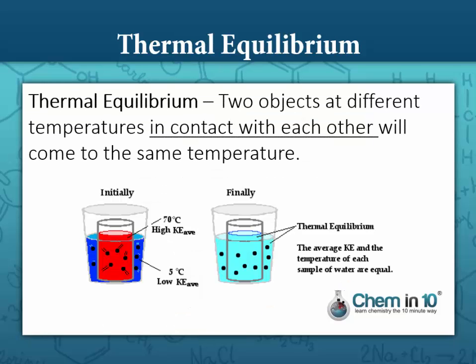Thermal equilibrium is reached when two objects at different temperatures in contact with each other reach the same temperature.